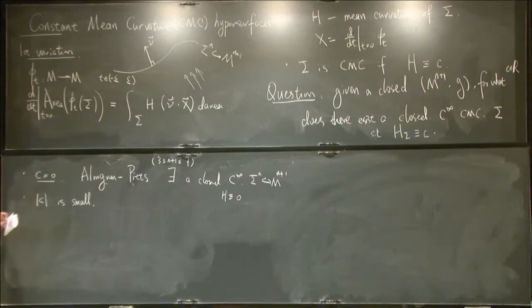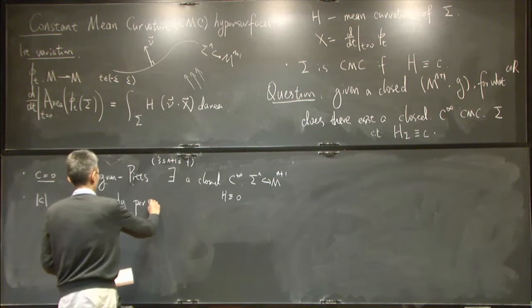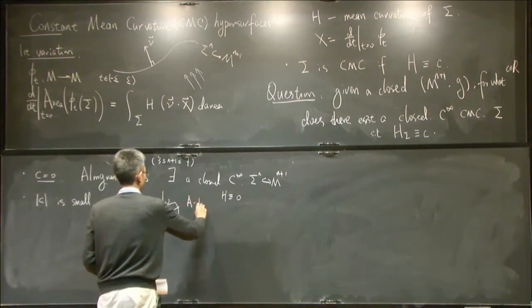So let's start with Almgren-Pitts theory and look for small c. If we are in a generic metric, we can use perturbation theory to construct a CMC whose mean curvature is a small number. So by perturbation, by perturbing this Almgren-Pitts solution,